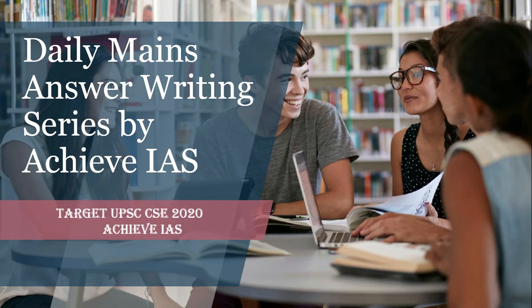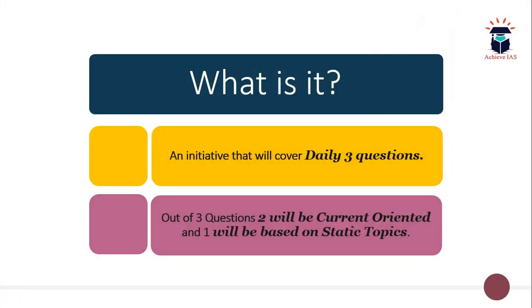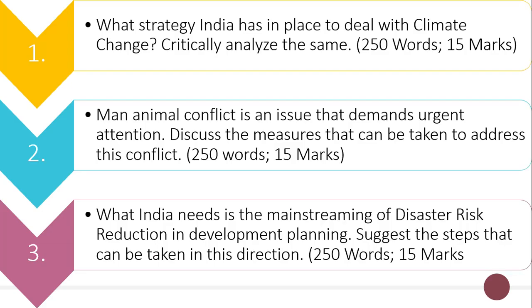Friends, as you know, on our channel we are targeting the civil services exam. For that purpose, we have started multiple series targeting both prelims and mains. This video is about our mains answer writing series where we daily give you a certain number of questions to write answers for. Today is August 12th, so let's see today's questions. The first question is: what strategy does India have in place to deal with climate change?